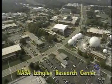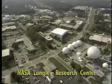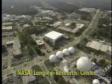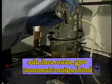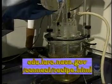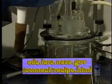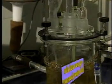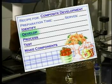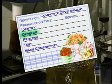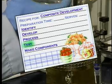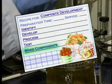NASA Langley Research Center is the agency's center of excellence for structures and materials research. We can identify five steps in composite development. Van may use similar steps in planning and preparing a cooking recipe: identify the application, develop materials to meet requirements, process the material, test the material, and make structural components.